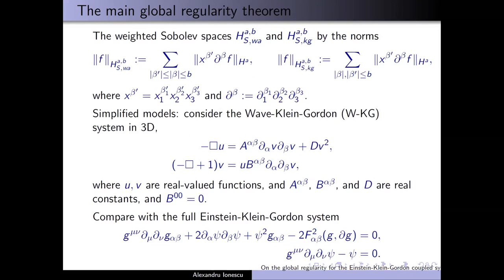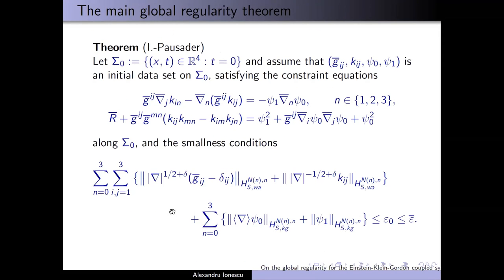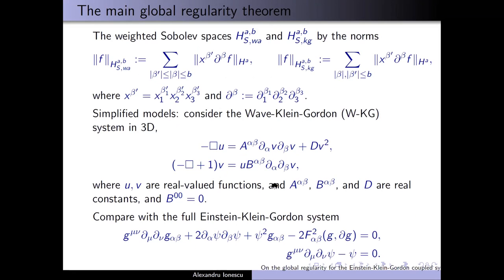The reduced Einstein Klein-Gordon system is actually equivalent to the Einstein Klein-Gordon coupled system — this means we have global regularity in the neighborhood of the Minkowski metric. The spaces that came up are of two types: the wave type and the Klein-Gordon type. For the wave type, the vector fields we apply to measure the norms are x dx. For the Klein-Gordon type, we are allowed to apply x without putting the dx, and we apply up to three of these vector fields.